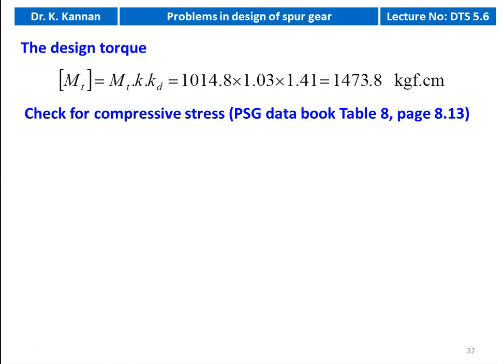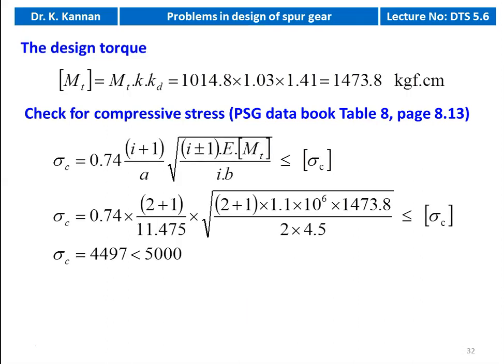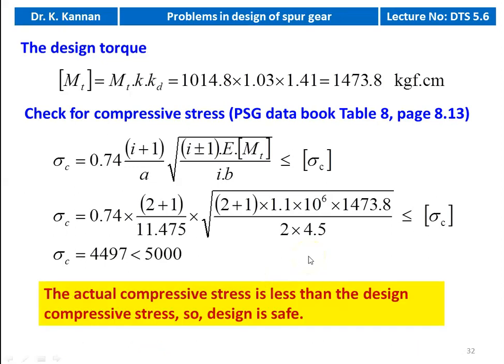We check for the compressive stress. The equation is available on page number 8.13, table 8. σC = 0.74 × (I + 1) / A × √[(I + 1) × E × MT / (I × b)] = 0.74 × 3 / 11.475 × √[3 × 1.1 × 10⁶ × 1473.8 / (2 × 4.5)]. The actual compressive stress for the gear is 4497 kgf/cm², which is less than 5000 kgf/cm². The design is safe.